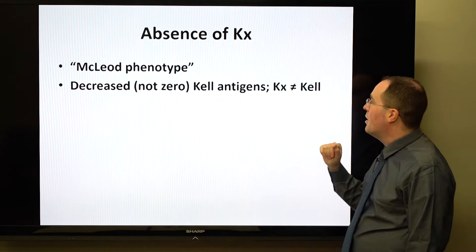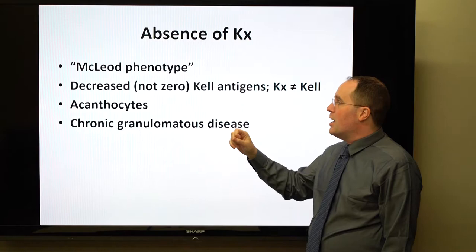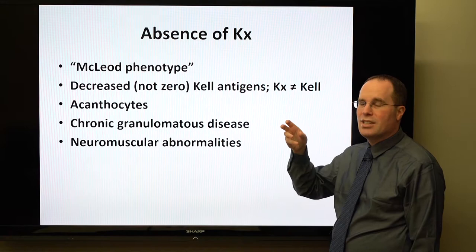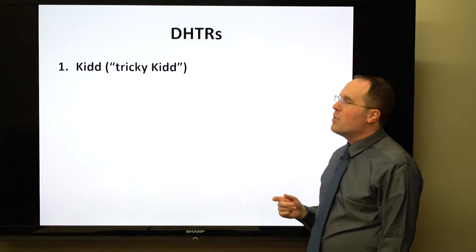McLeod phenotype is associated with acanthocytes on the peripheral smear, chronic granulomatous disease (CGD), and various neuromuscular abnormalities. A deletion at the Kx gene site often overlaps with other deletions. It's rare in real life but a frequent exam question.